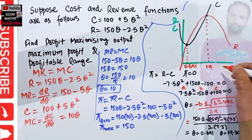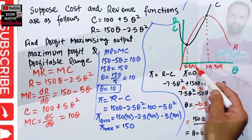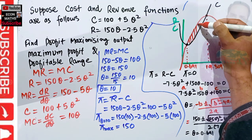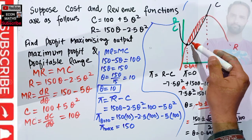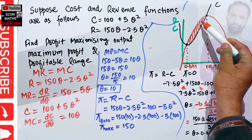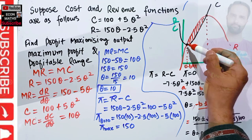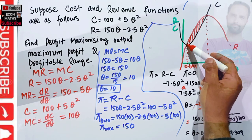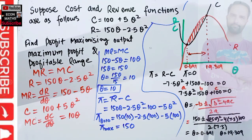The profitable range is from Q = 0.691 to Q = 19.309. Between these two points, the revenue function is above the cost function, meaning revenue is greater than cost and profit is positive. At Q = 0.691 and Q = 19.309, the two functions intersect and economic profit equals zero. Between these two points is the profitable range.